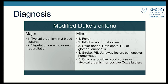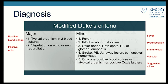This is the modified Duke criteria used to diagnose endocarditis. You need either two major criteria — a strongly positive blood culture plus a strongly positive echo — or one major with three minor, or all five minor criteria: fever, predisposition (IV drug use or abnormal valves), immunological phenomena such as Osler nodes or Roth spots, embolic events such as strokes, PEs, Janeway lesions, conjunctival hemorrhage, and suggestive microbiology.